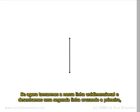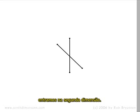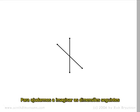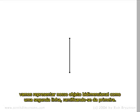If we now take our first dimensional line and draw a second line crossing the first, we've entered the second dimension. The object we're representing now has a length and a width, but no depth. To help us with imagining the higher dimensions, we're going to represent our second dimensional object as being created using a second line which branches off from the first.